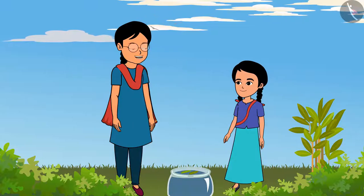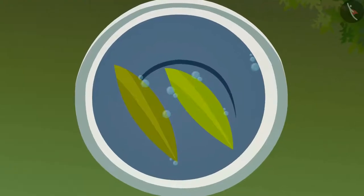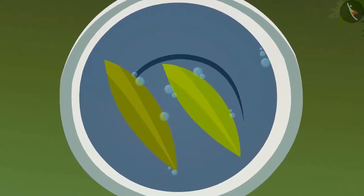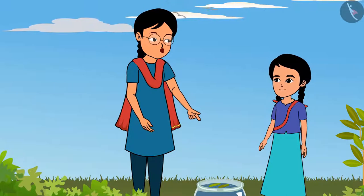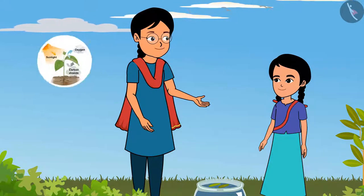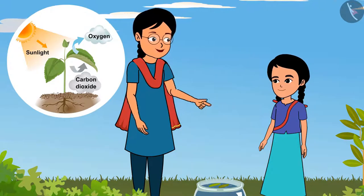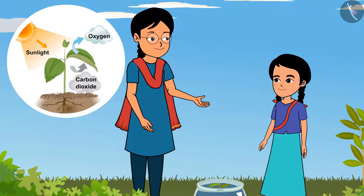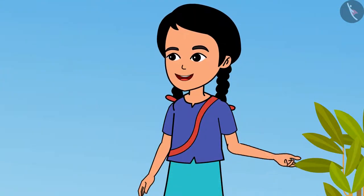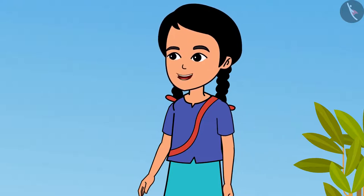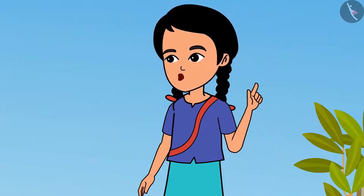Now observe carefully and tell me what you see. Didi, I see a few air bubbles here! Yes, this means that the plants also breathe. These air bubbles are of oxygen. The leaves take in carbon dioxide from the air and release oxygen. This is like magic — we are able to observe through this experiment what we are not able to observe otherwise. Plants also respire!